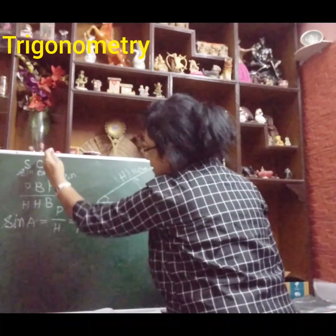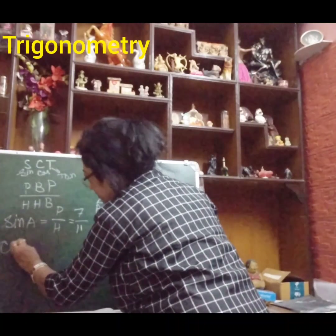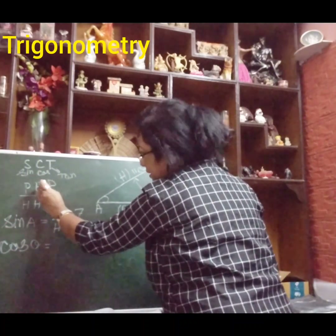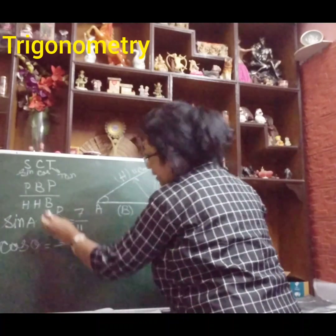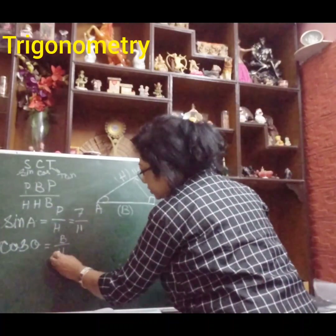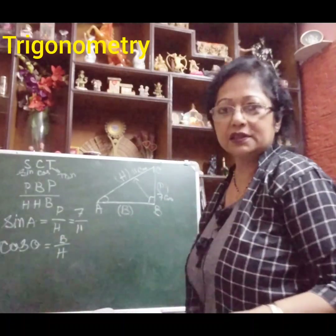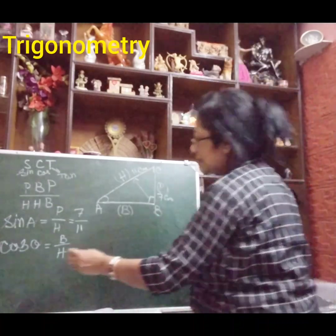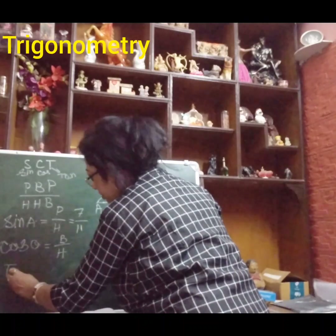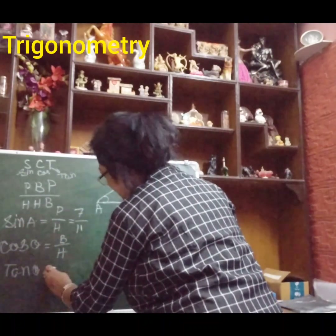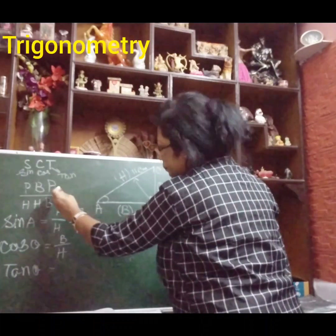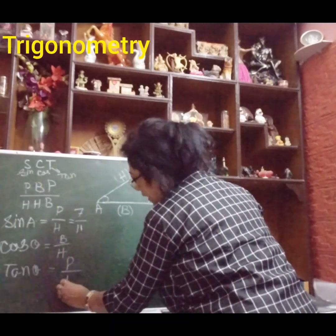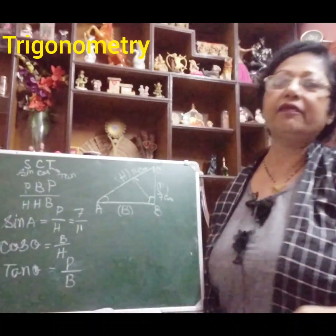Same way, for cos theta, you take 'Badri Prasad ka B' and 'Har Har' — the middle B and second H. So cos theta equals base by hypotenuse. Now for tan theta, you take 'Prasad ka P' and 'Bole ka B' — so tan theta equals perpendicular divided by base.